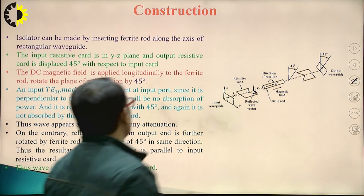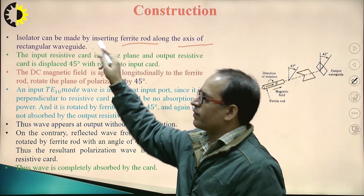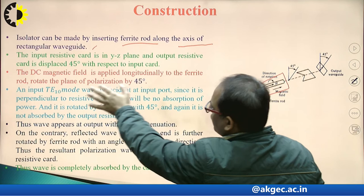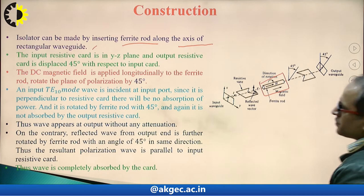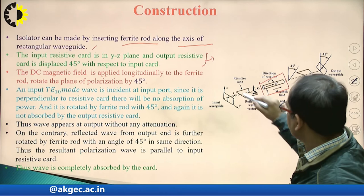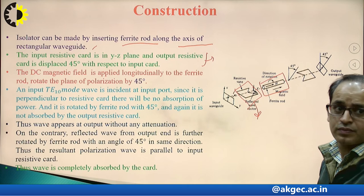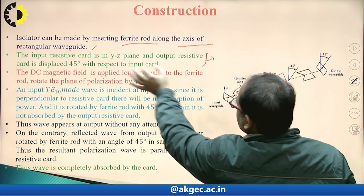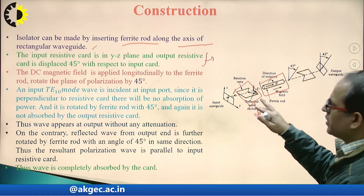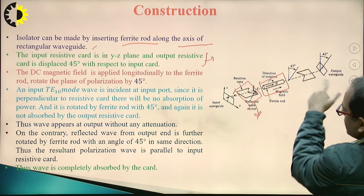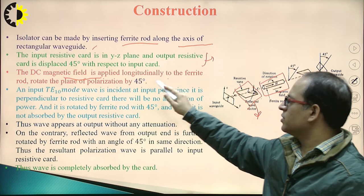An isolator is constructed by inserting a ferrite rod along the axis of a rectangular waveguide. A DC magnetic field is applied longitudinally to the ferrite rod, which rotates the polarization by 45 degrees. There is an input resistive card, and the output resistive card is placed at 45 degrees to the input card in the YZ plane. This 45-degree displacement corresponds to the rotation introduced by the ferrite device.